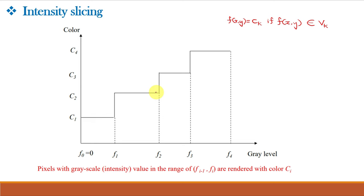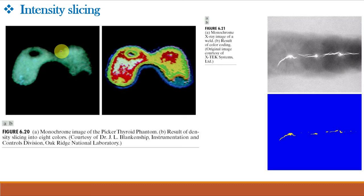This figure is the monochrome image of the radiation test pattern of a Picker thyroid phantom. And this is the result of density slicing into 8 color regions. And we can observe that different problem areas can now be easily visible in this image.